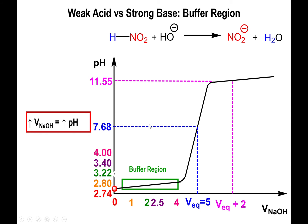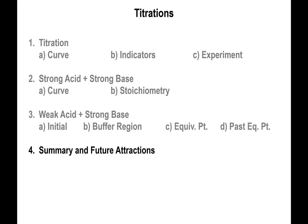With that, we have the entire titration curve picture: the initial pH of 2.74, four pH values in the buffer region, the equivalence point pH greater than 7, and the pH past the equivalence point shooting up very high due to excess hydroxide. In the next lecture, I'll show one more example using a weak base with a strong acid — the same approach applied to the counterpart.